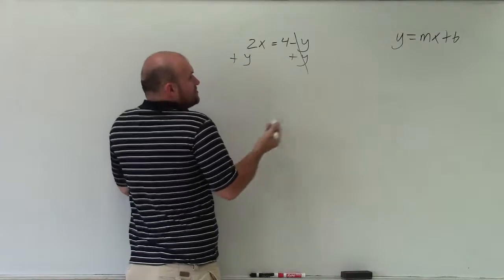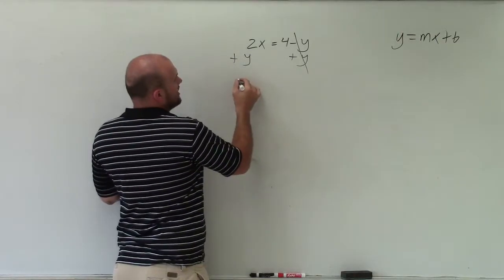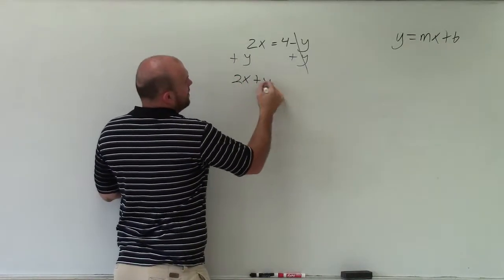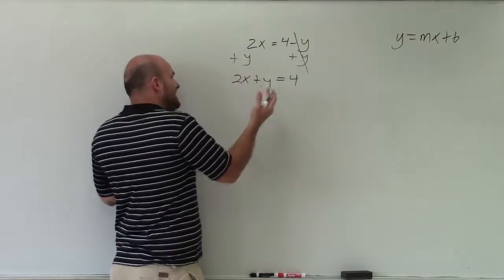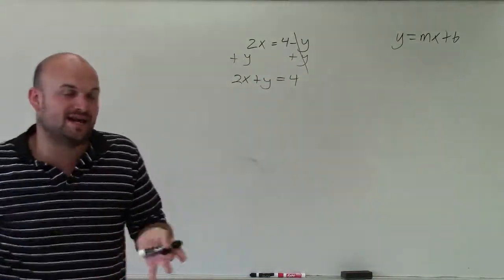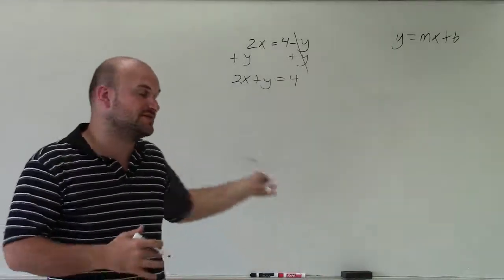Now, so negative y plus y has just become 0y. So therefore, I'm left with 2x plus y equals 4. Again, I need to get rid of... all I did really by adding y on both sides, I just got the y to the other side.